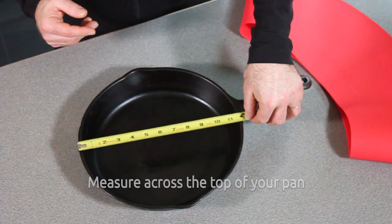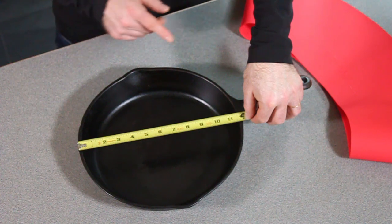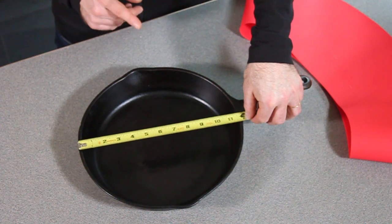If your pan is 10 inches, you need a frywall 10. If it's about 12, like this pan, you'll need a frywall 12.